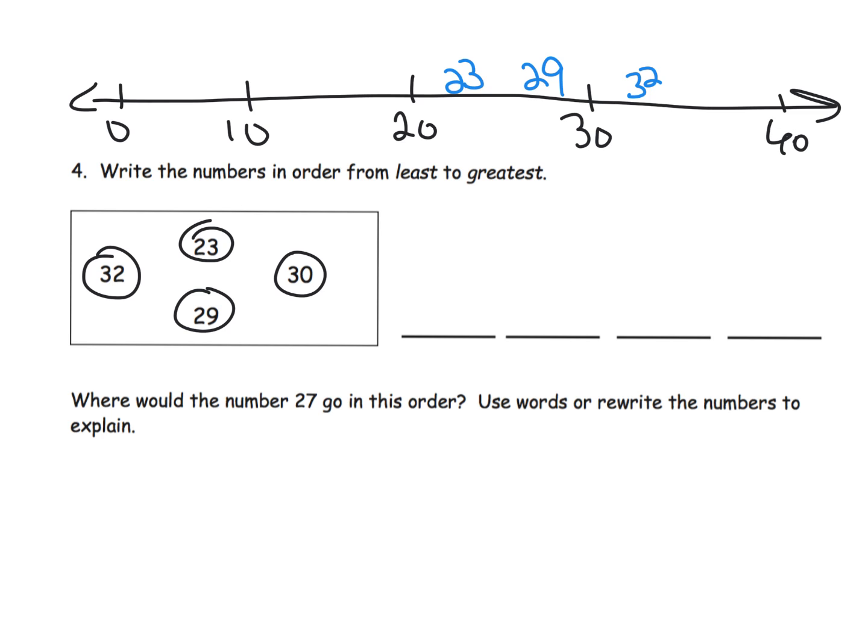So that's looking good so far. And then the last number 30, where is 30 going to go? And we can see oh 30 boom right there, it's perfect. Now this list right here gives us these numbers in order, so we see that 23 is the least followed by 29 followed by 30 followed by 32.